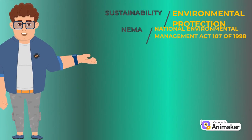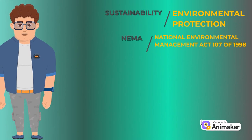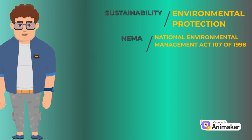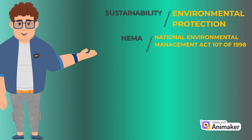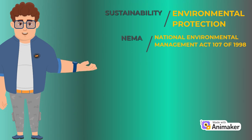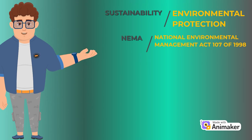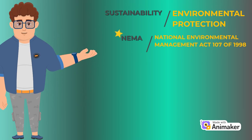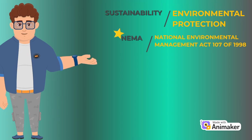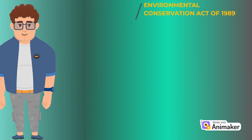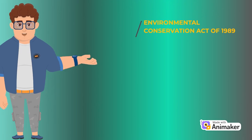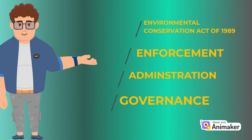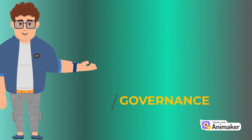In South Africa, the National Environmental Management Act has been enacted as a conduit towards sustainability and environmental management. The Act was first introduced in 1998 as the National Environmental Management Act 107 of 1998. Today, it is widely abbreviated as NEMA. Before NEMA was introduced, there was the Environmental Conservation Act, which was deemed to be inadequate to deal with enforcement, administration, and governance of all environmental aspects.